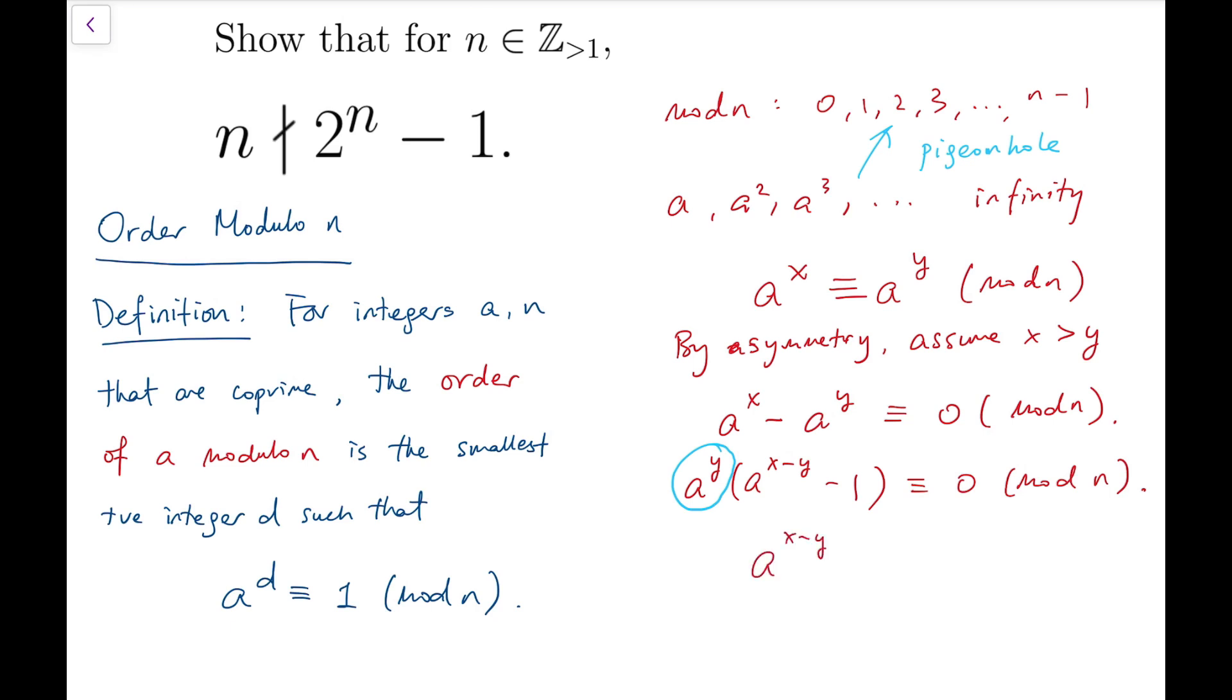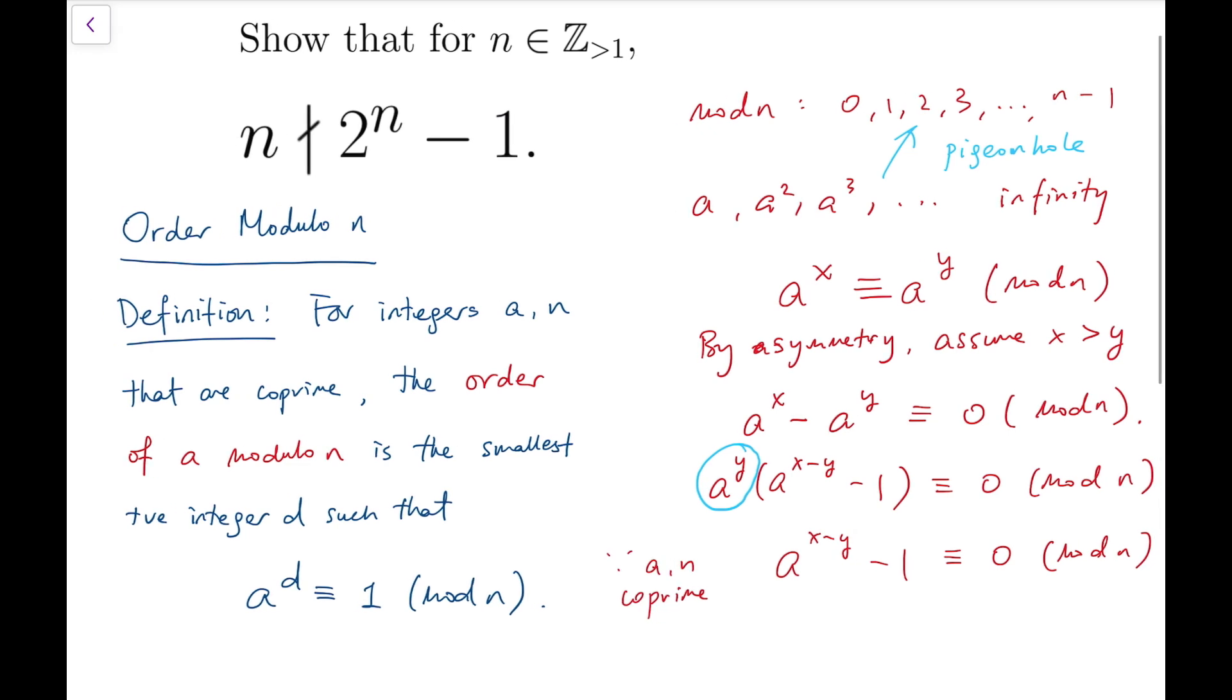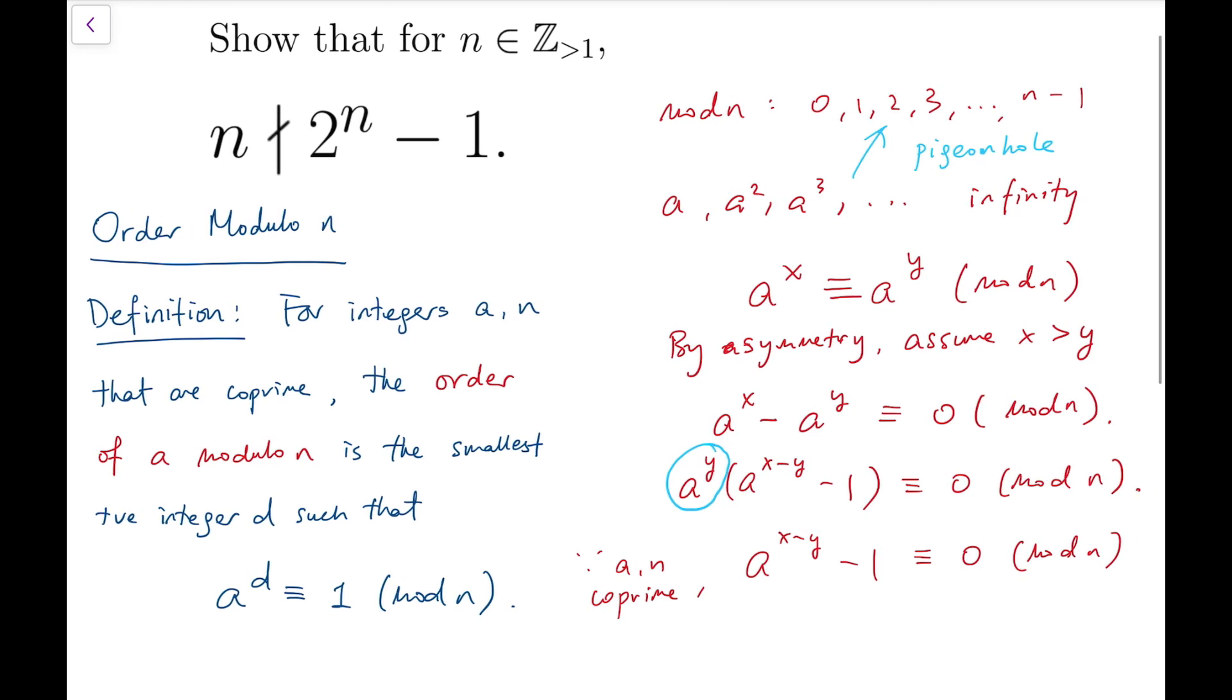So that means a to the power x minus y minus one is congruent to zero mod n, since a and n are co-prime. Now from this, we can say a to the power x minus y is congruent to one mod n.